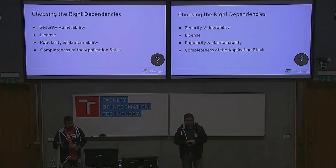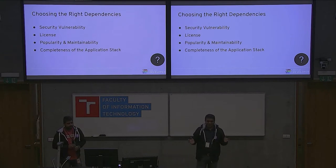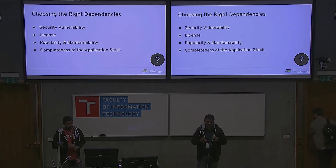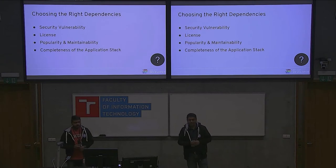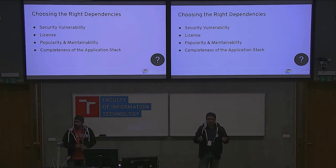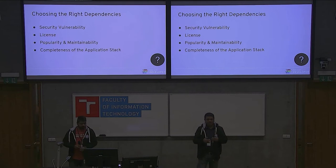Number two is license. License is tricky for developers — it does not mean much at times. But if your dependencies have conflicting licenses, say permissive ones like MIT or Apache versus more restrictive ones like GPL, then when you go to publish your application there is a conflict. You can't settle on one license for your own application because of conflicting dependency licenses.